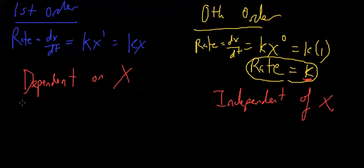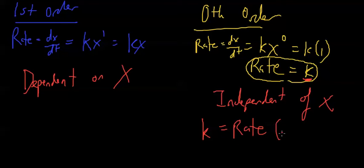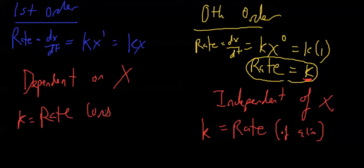Just one more thing to touch upon. Both of these equations have k in them, but they mean different things. In zero order, k is rate — it's equal to the rate of elimination. But in first order, kx is rate, not k alone. So k here is going to be the rate constant — notice the word constant. It stays the same no matter what. So x is really going to be the influencing factor on rate in first order reactions.